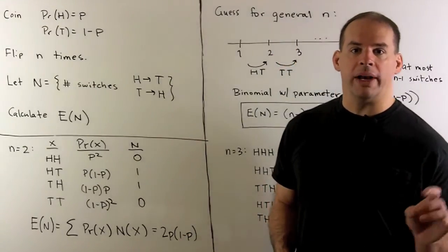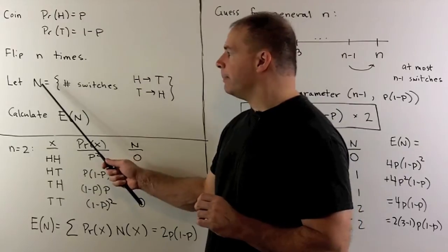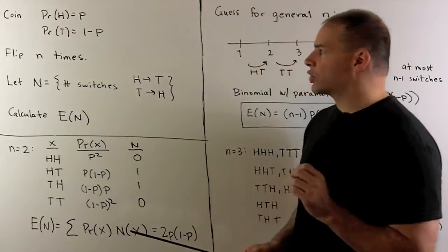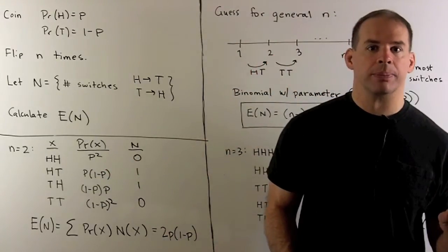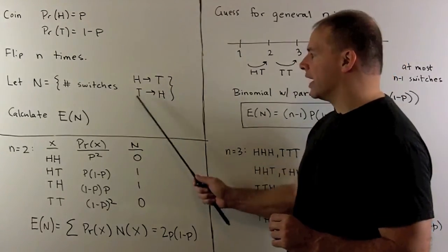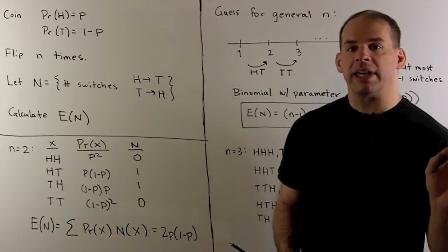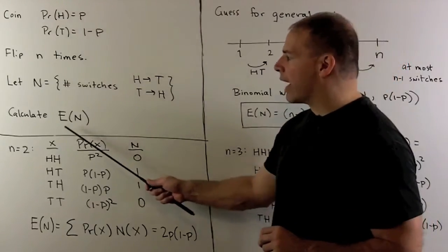We flip our coin n times. We'll have a random variable capital N, which is just going to record the number of switches in those n flips. So we're going to count the number of times we go from heads to tails or tails to heads. The problem: we want to calculate the expectation of our random variable N.